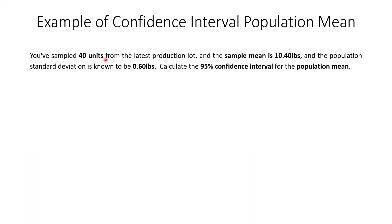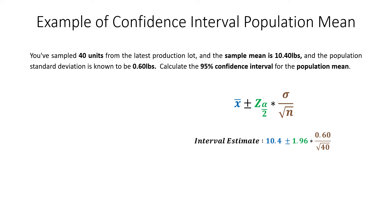Here's a worked example: we've sampled 40 units from our latest production lot, measured a sample mean of 10.4 pounds, and we know the population standard deviation is 0.60 pounds. We want to calculate the 95% confidence interval for the population mean. Plugging in: sample mean = 10.4, z-score for 95% = 1.96, population standard deviation = 0.60, n = 40. Doing the math gives us 10.4 plus or minus 0.186, where 0.186 is the margin of error.